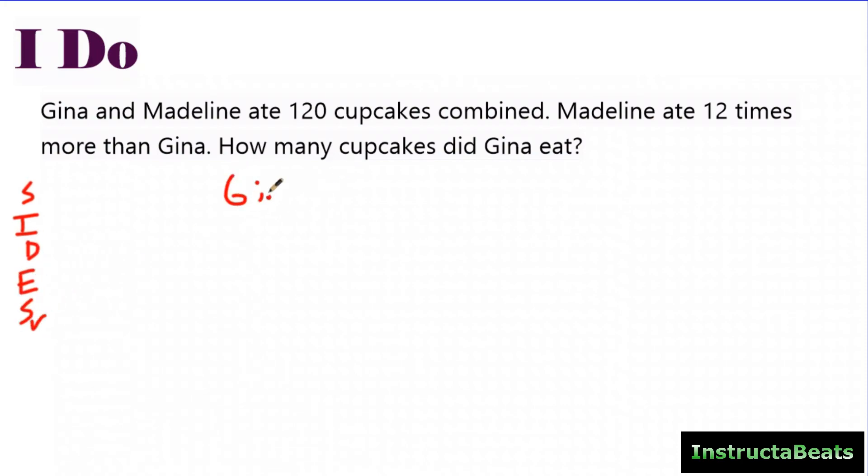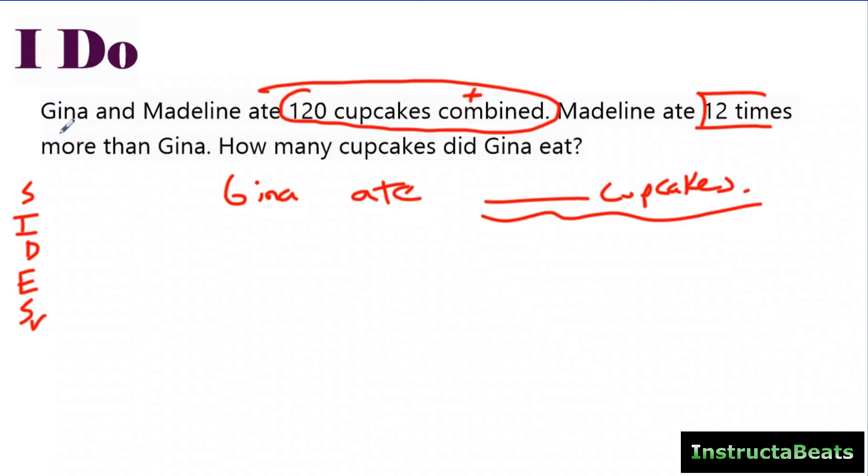My statement's going to say, Gina ate blank cupcakes. So I'm looking for anything about cupcakes, anything about Gina. Gina and Madeline ate 120 cupcakes combined. I'm going to annotate that with an addition sign right here. Madeline ate 12 times more than Gina. Now I put a box around this because that's a multiplicative comparison model. I'll always have my students box that so they can see it. So now I've done my statement and I've identified, and those two things have helped me realize I'm doing a multiplicative comparison model because it said 12 times more than - I'm comparing Madeline and Gina using multiplication.